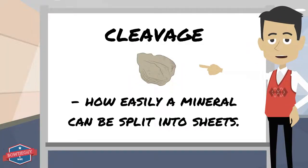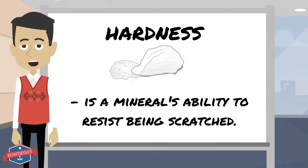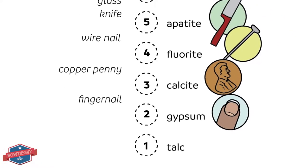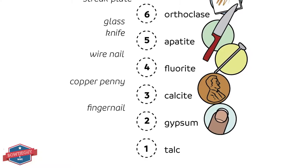Cleavage describes how easily a mineral can be split into sheets. Hardness is a mineral's ability to resist being scratched. This is Moh's scale of hardness. Geologists use this scale to determine the hardness of a mineral.